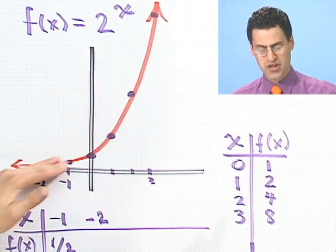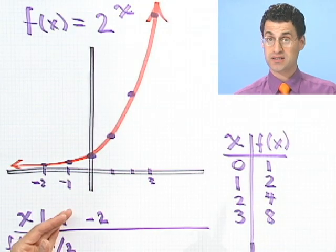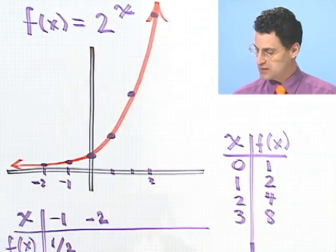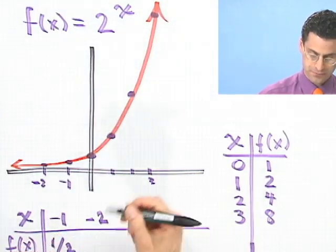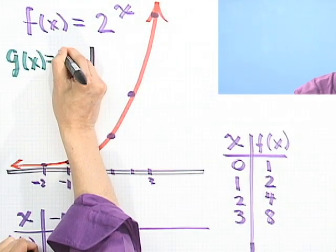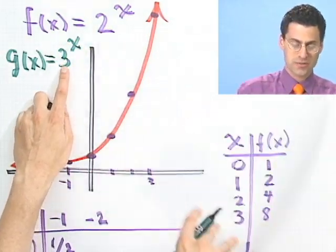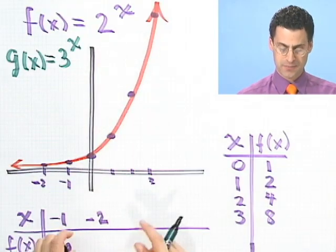Now, once you have this as the general shape of an exponential, you can ask, what happens if I change this number? Like, what happens if I look at g of x equals 3 to the x? So what if I change this and enlarge the base? How does that affect the picture?